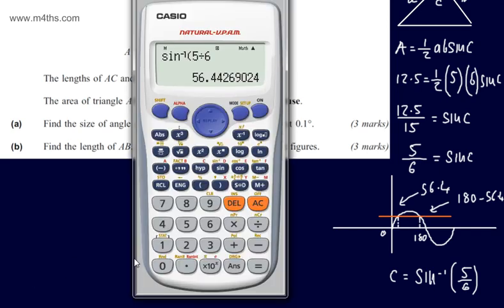We know that this graph is symmetric about the line where X equals 90 degrees. So if I do 180 minus this value, we're going to have an answer of 123.55, and so on.